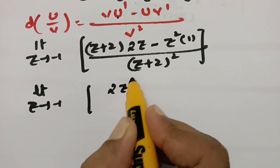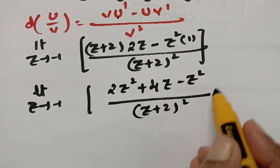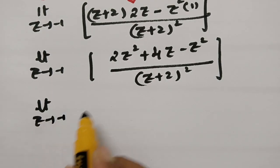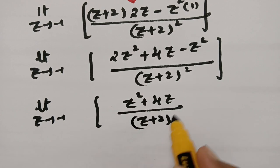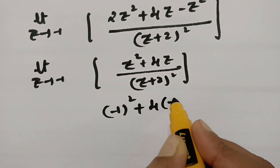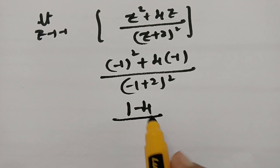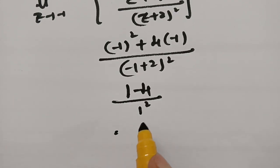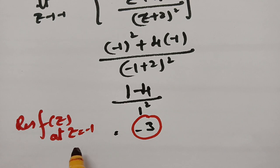Taking the limit as z → -1: [(-1)² + 4(-1)] / (-1+2)² = [1 - 4] / (1)² = -3 / 1 = -3. So the residue of f(z) at z = -1 (pole of order 2) is -3.